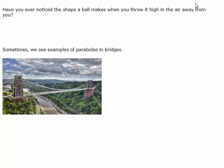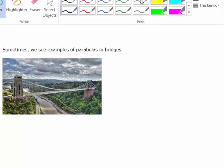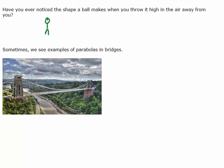Have you ever noticed the shape a ball makes when you throw it high in the air away from you? If we were standing and threw a ball, the ball would go up, arc, and then come back down. That shape that the ball makes when you throw it is called a parabola. Sometimes you'll see parabolas in things called parabolic arches or inside of bridges. Notice this is also a parabola right here — it looks kind of like a U shape, it's curved. There are two examples of parabolas: one opening down and one opening up.